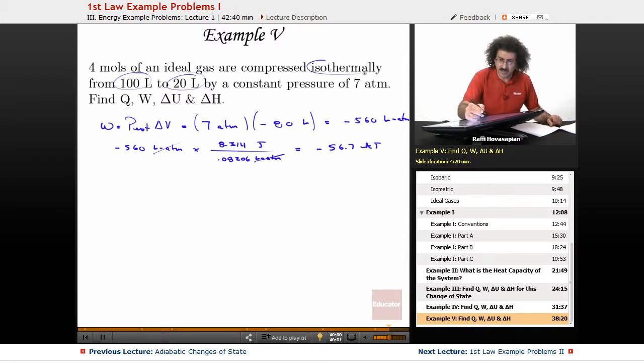Well, it's an isothermal process. So we already know that for an isothermal process, delta U equals 0. And if delta U equals 0, that means 0 equals Q minus W, which means that Q equals W. So Q equals minus 56.7 kilojoules. So that takes care of Q.